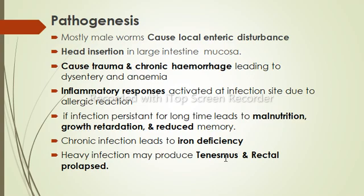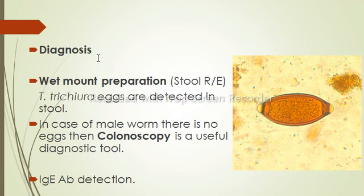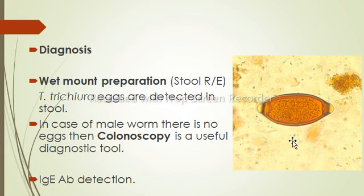Diagnosis can be done through wet mount preparation, i.e., microscopic examination to detect barrel-shaped, unembryonated eggs. These eggs have bipolar plugs and a smooth shell. Colonoscopy has also been shown to be a useful diagnostic tool, especially in patients infected by only a few worms with no eggs present in the stool sample. Additionally, diagnosis can be done through immunoglobulin E antibody detection.